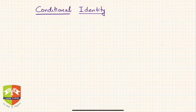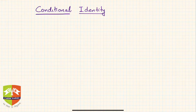Welcome guys. In this session we are going to learn one more algebraic identity and see a special case of that identity. This identity is going to be useful because it contains cube terms of a trinomial. Let us see the identity first and then understand what a conditional identity is.